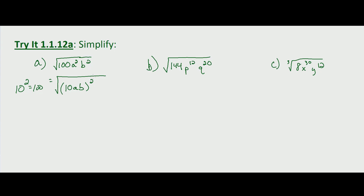One issue here is that we have an even index — there's this invisible 2 out here — and an even power, so n equals 2. Because the index is even, we have to take the absolute value. So we get the absolute value of 10ab. Since we know 10 is positive, this simplifies to 10 times the absolute value of ab.